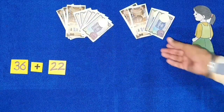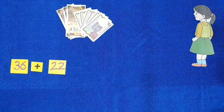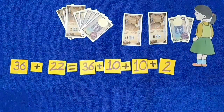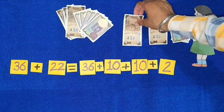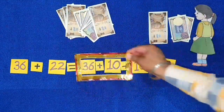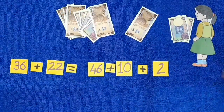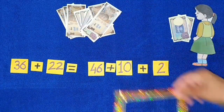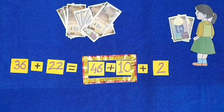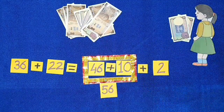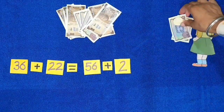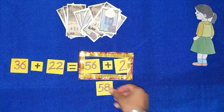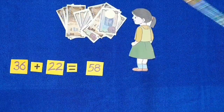In the first method, we will split 22 as 10, 10, and 2. Now 36 and 10 rupees make 46 rupees. 46 rupees and 10 rupees more will make 56 rupees. 56 and 2 rupees more will make 58 rupees. So Harman has 58 rupees.